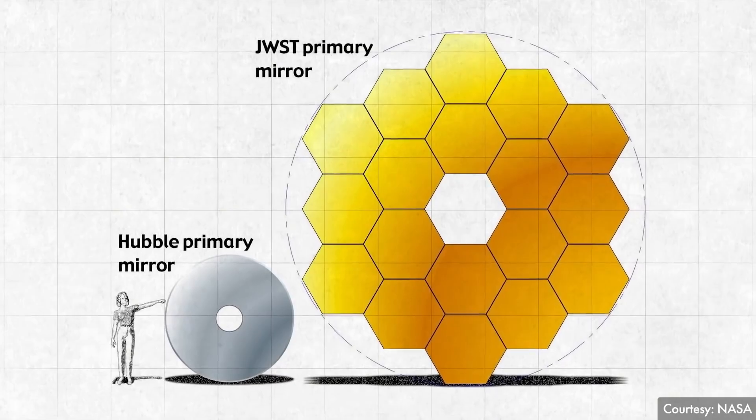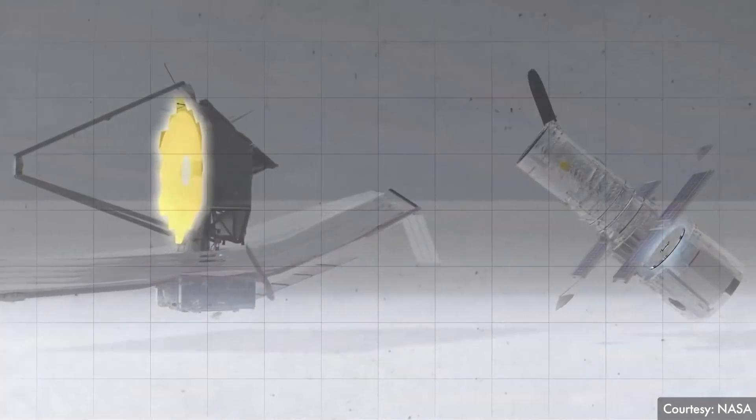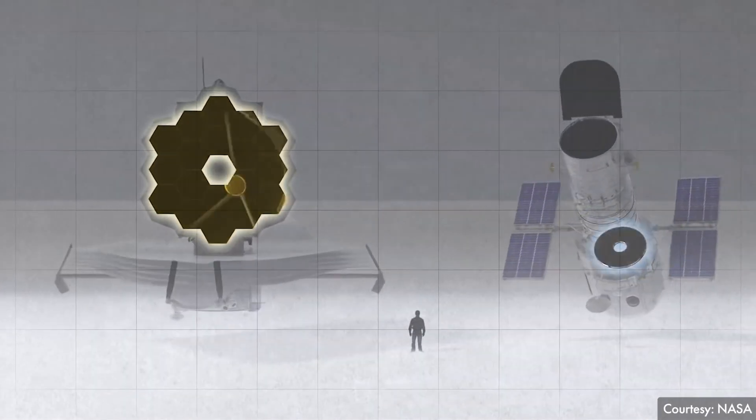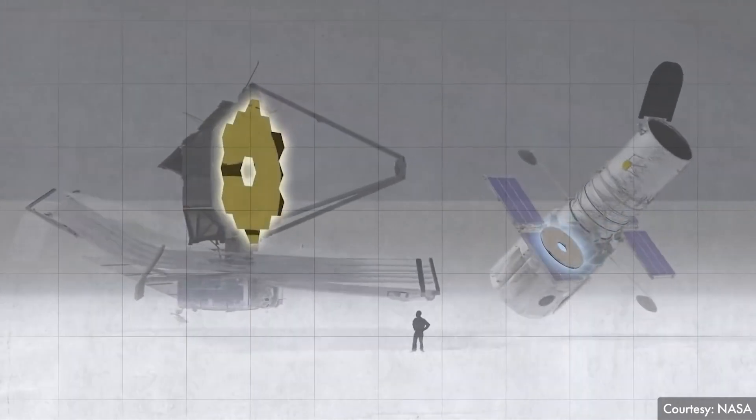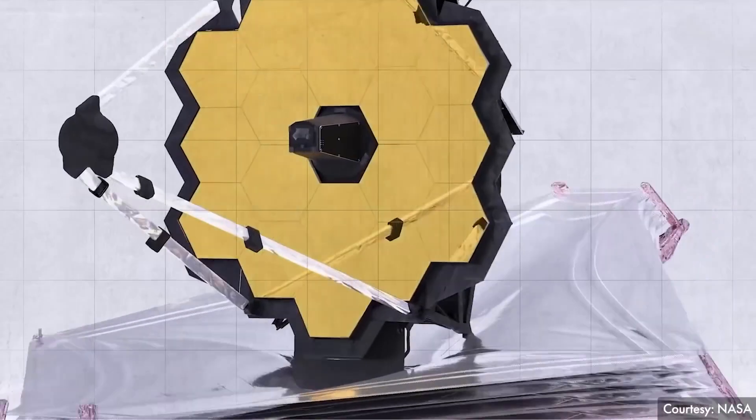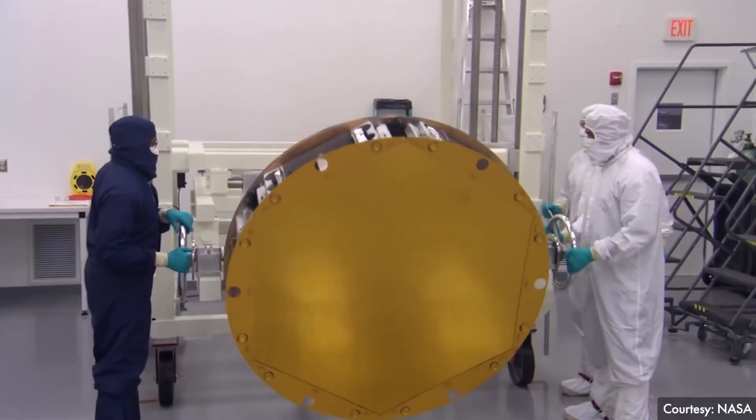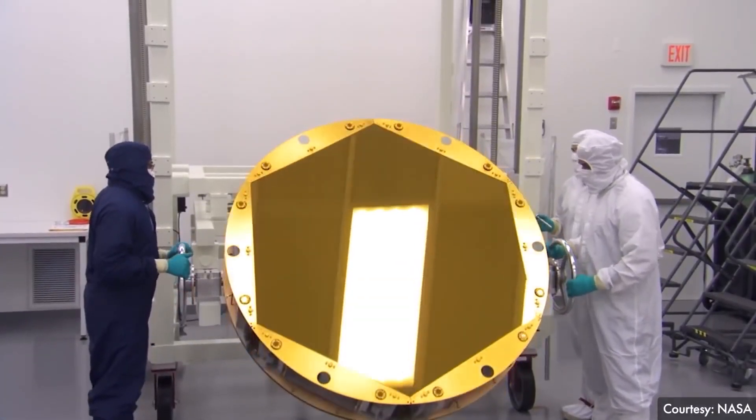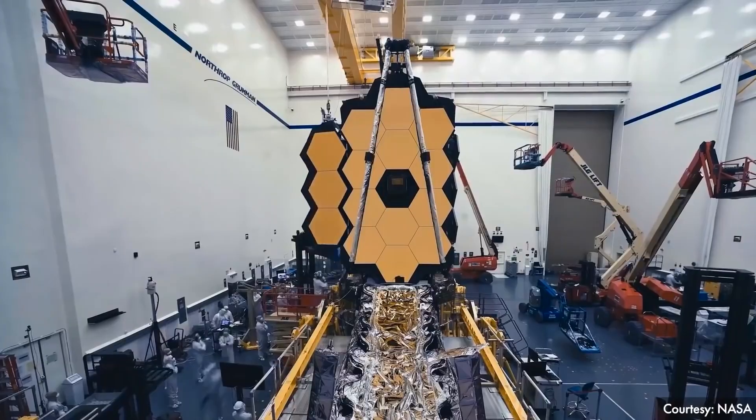The second is the mirror size. Hubble's was an impressive 7.8 feet in diameter, whereas Webb's beautiful gold-hued mirrors combine for a diameter of 21.3 feet. Overall, that amounts to more than six times the light-collecting area. And the more light you can collect, the fainter and farther away things you can see in the universe.